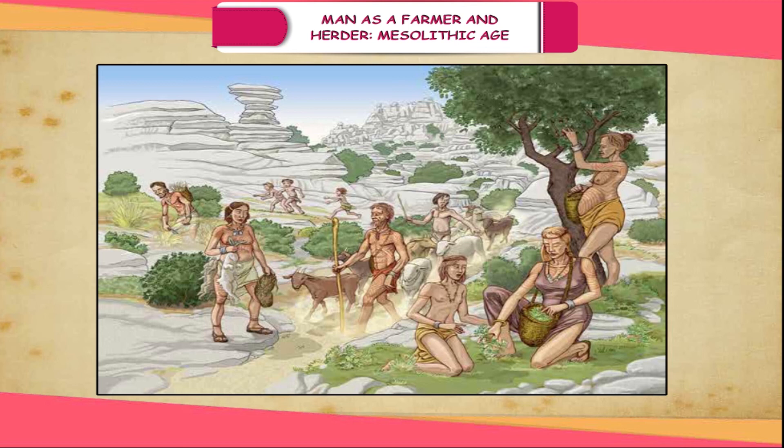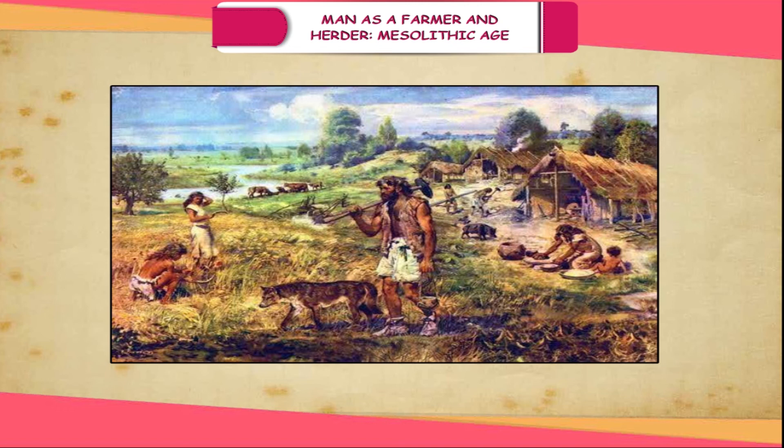Most people still lived in rock shelters and caves. However, some returned at the time of harvest to the places where they had sowed seeds and stayed until they had used up the crops. These people made their own primitive houses, usually built in river valleys where there was plenty of water and fertile soil for growing crops.